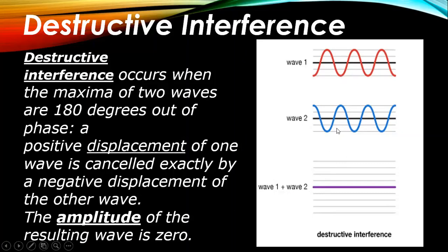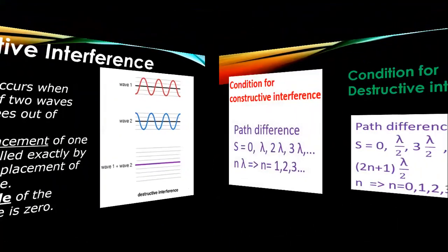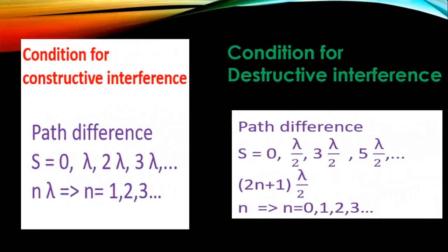Both waves — wave one and wave two — are out-of-phase, so the crest of one wave cancels the trough of the other. The resultant wave amplitude becomes zero. This is how we get constructive interference and destructive interference.